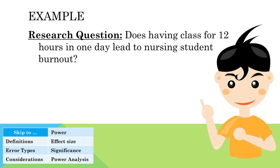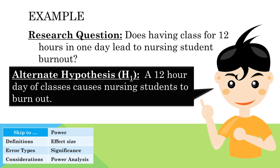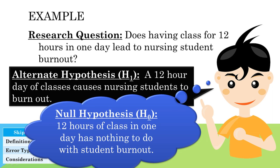For example, if a researcher asks the question, does having class for 12 hours in one day lead to nursing student burnout, the hypothesis would indicate the researcher's best guess of the results: a 12-hour day of classes causes nursing students to burn out. Therefore, the null hypothesis would be that 12 hours of class in one day has nothing to do with student burnout.